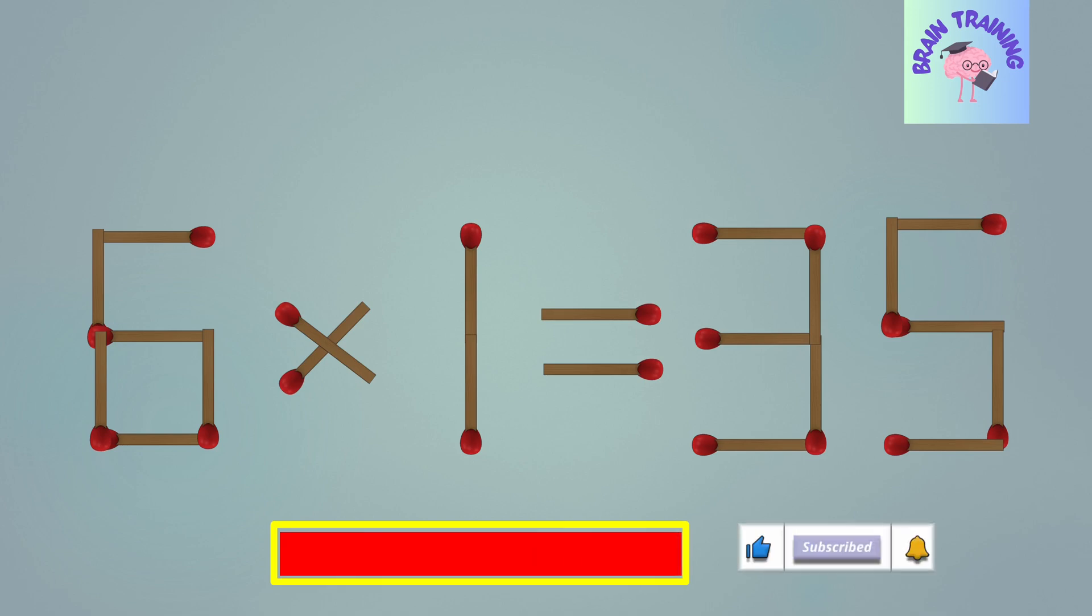Now for the answer. To correct the equation, take a matchstick from the number 6 and move it to the number 1, changing it to the number 7. This gives you 5 × 7 = 35. Perfect!